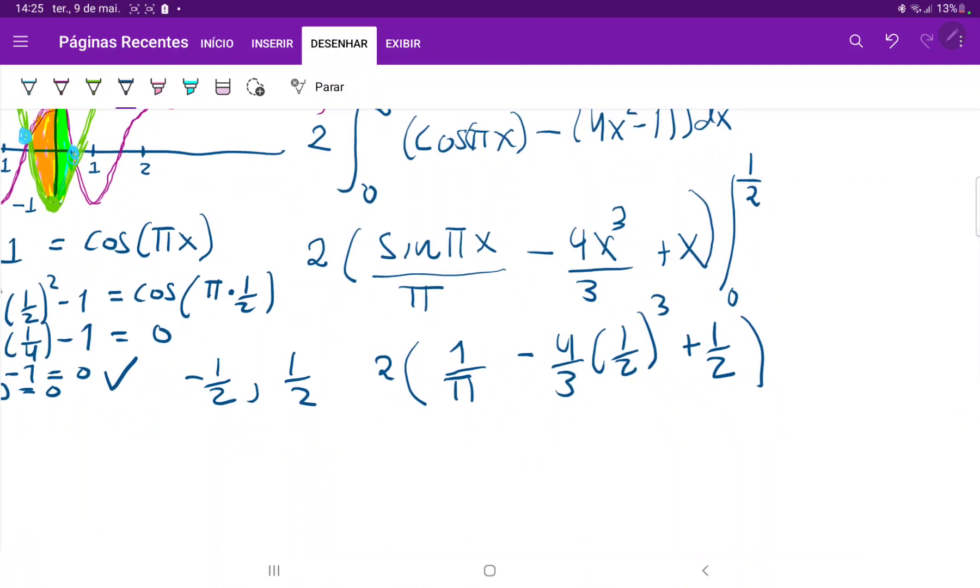This equals 2 over π. Let's distribute the 2. Then minus 2 times 4 is minus 8 over 3, and 1 half cubed is 1 over 8, and then plus 2 times 1 half, so just plus 1.